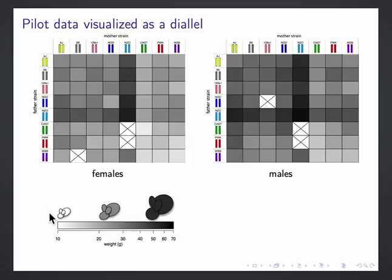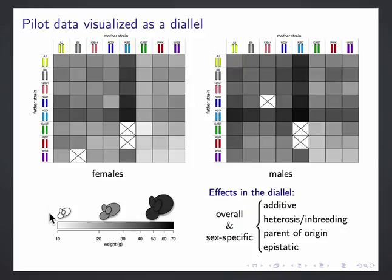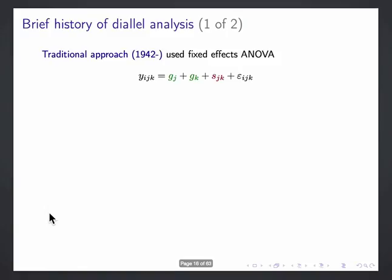In general, when we look at the data as a diallel, we see all these different patterns that correspond to many of our notions about types of heritable effects, additive effects, heterosis or inbreeding effects, parent of origin, epistasis, and then also all the sex-specific versions of those. And the strange thing is that usually when people have that kind of data, they don't analyze it as a diallel. They don't necessarily think of it as a diallel. And so why would that be?